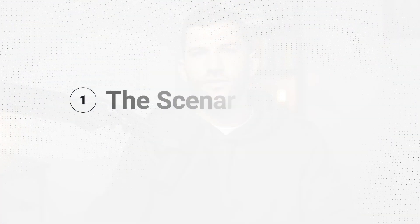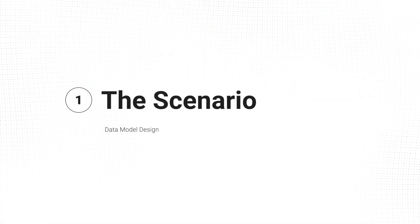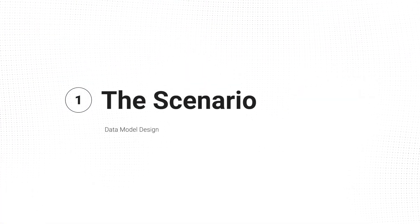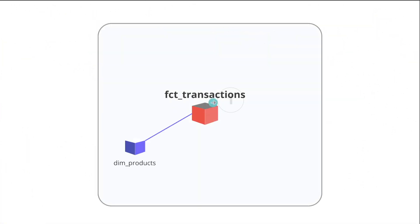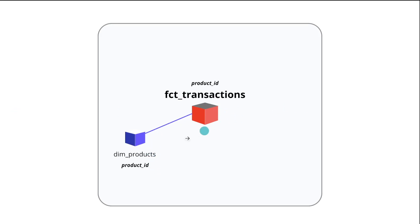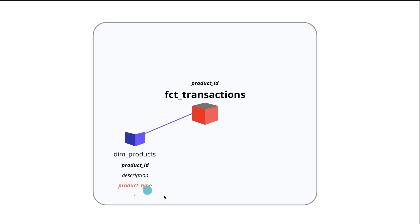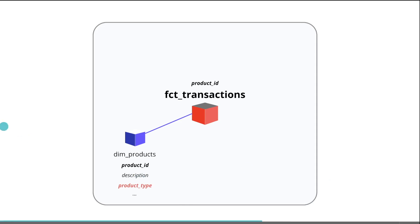So in this video I'm going to explain the example scenario and talk through some of the different answers that I got. In this example we have a core fact table of transactions linking to product information. There's a very clear join to a product table — a dim product table — with descriptions about the product. But the nuance and the question here was: what do you do about product type information?